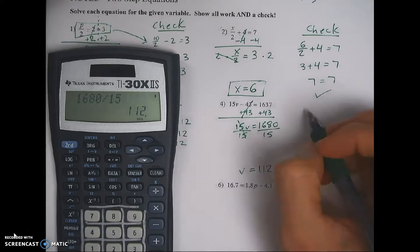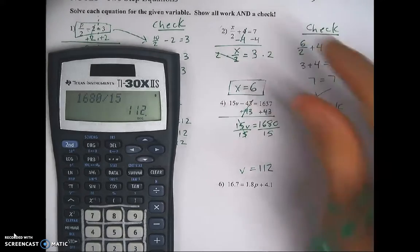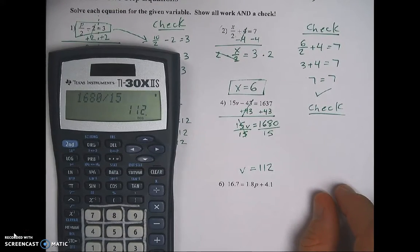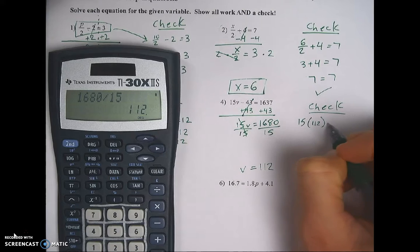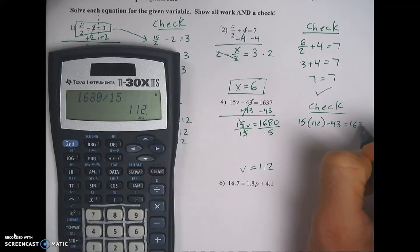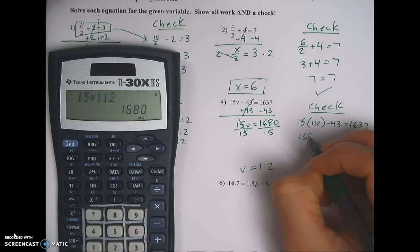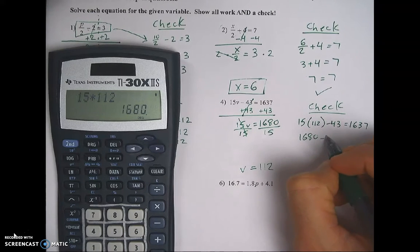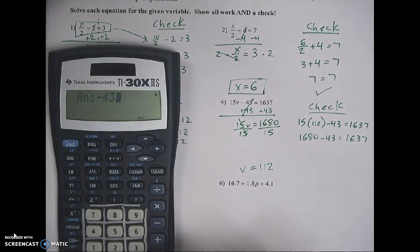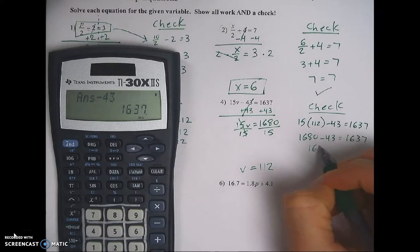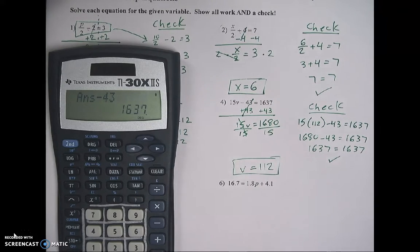Sounds like a really big answer. Let's check it and see if it's right. And you do need to write the word check. So it's really clear. Here's my check. Here's my work. Otherwise, it just ends up looking like a bunch of numbers. So rewrite the original. 15 times v is now 15 times 112. 15 times 112 is 1680. And you're going to see that number show up again. And now I'm going to subtract 43. And I get 1637 on both sides. Check works. Answer is good.